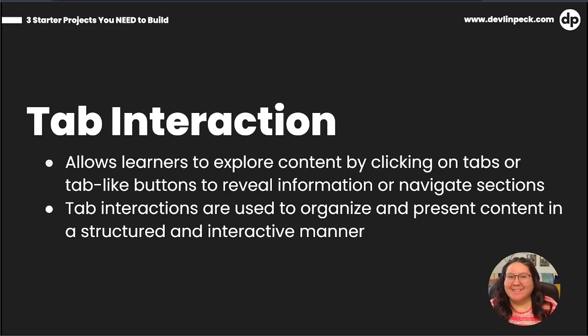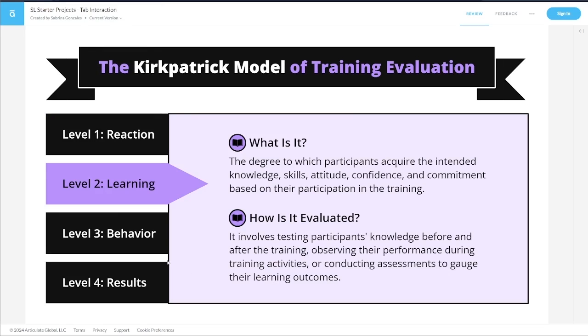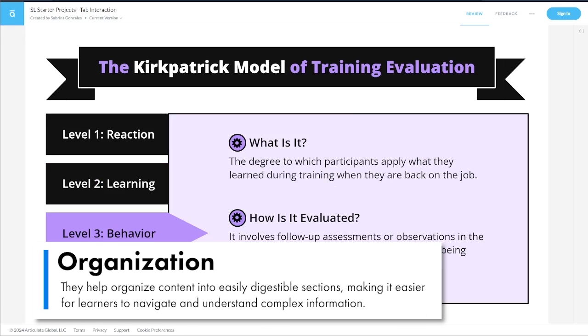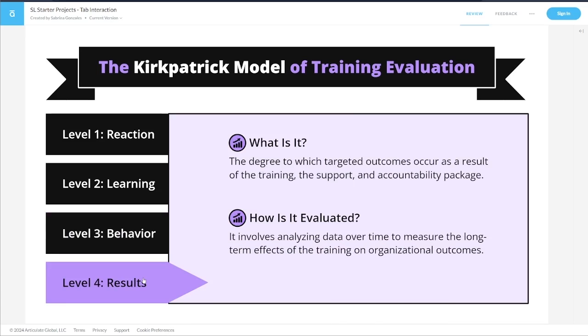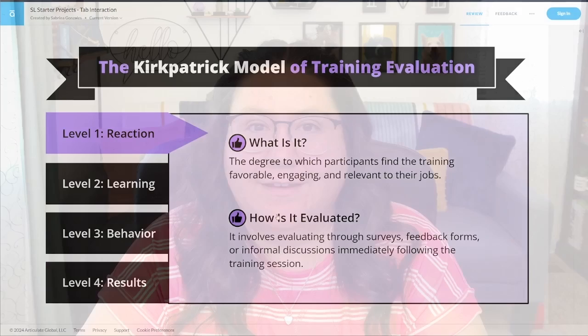Instead of me telling you all about these tab interactions, let's take a look at an example. The content you're going to see in all of the examples today is the same content — that's done on purpose because I want to show you that no matter the content you get, you can deliver it in a variety of different ways. Here we have a tab interaction. You can see there are tabs on the side and the content is broken up. Tab interactions help organize content into easily digestible sections, making it easier for learners to navigate and understand complex information. They also give learners control over their learning experience, choosing which tabs to explore based on their interest or learning needs. Tab interactions are one of the formats I use most often, and once you learn how to build a basic version, you can start to make it more unique, customize it, and add more complexity.